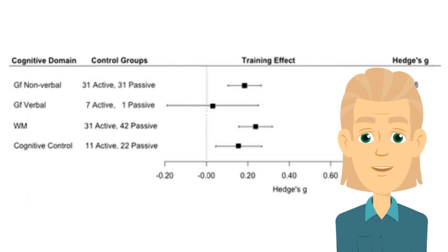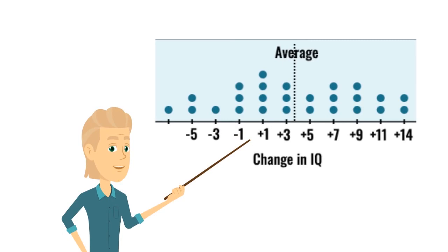Another recent meta-analysis by Severi and her colleagues also concluded there was a small but significant effect size for non-verbal fluid intelligence as well as working memory and cognitive control. Small here is an effect size of around 0.2 or 0.25, or the equivalent of just three to four IQ points. What this means is there's a spread of IQ gains for different people doing the training around an average of three to four points.